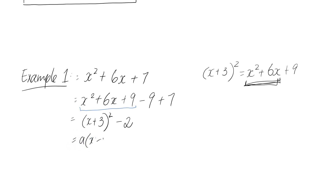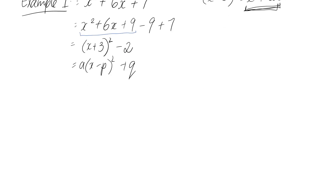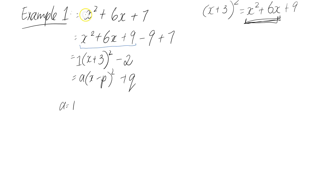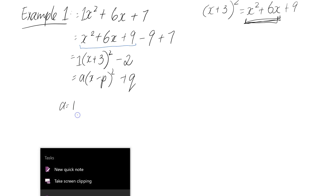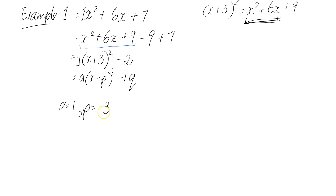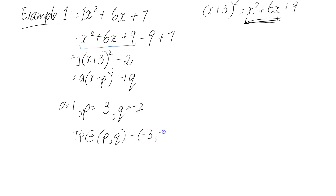We can write this as a times x minus p all squared plus q. Looking at this: a is the number out the front, which is 1. What's important is p and q. We can see that negative p equals 3, which means p equals negative 3 — just watching for that negative. And q equals negative 2. So the turning point is at p, q, which means in our case it's at negative 3, negative 2.